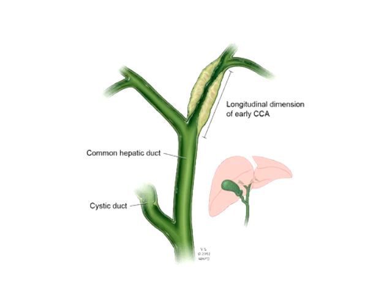I don't really believe in the Japanese system of periductal infiltrating and mass-forming cholangiocarcinomas — I think they're just spectrums of the same cancer. These cancers have a tropism for bile; we showed that bile acids will transactivate the epidermal growth factor receptor. So first they want to grow along the bile duct — that's the periductal infiltrating form. Then as they acquire mutations and become more aggressive, they grow away from the bile duct and you see a mass. So the periductal infiltrating is an earlier stage of the mass-forming tumor.